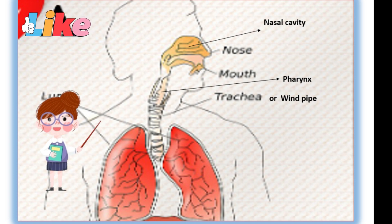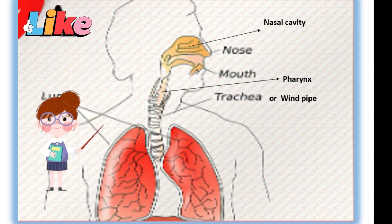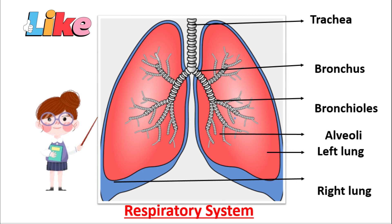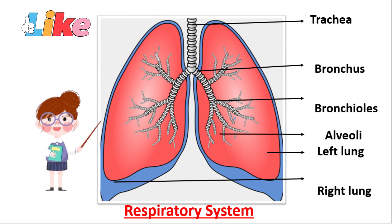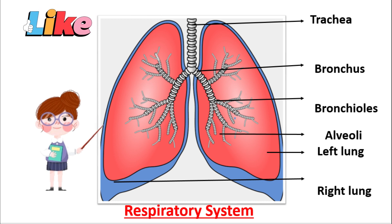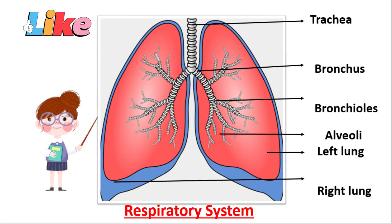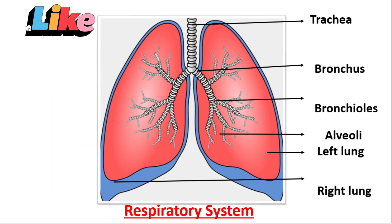1. Nose. 2. Nasal Cavity. 3. Pharynx. 4. Trachea or Wind Pipe. 5. Bronchi. 6. Bronchioles. 7. Alveoli. 8. Pair of Lungs — Left Lung and Right Lung. Thanks for watching.